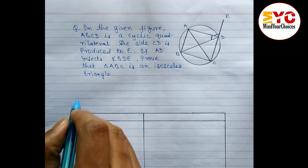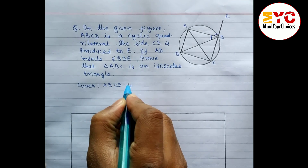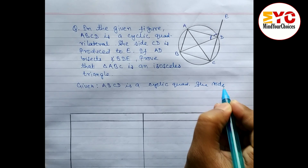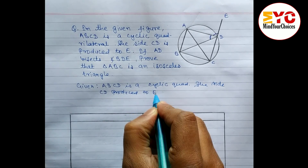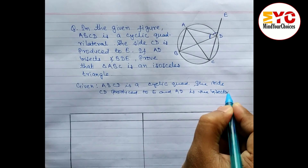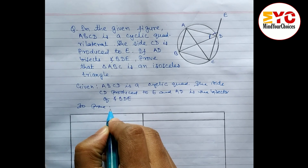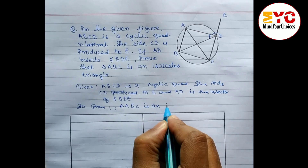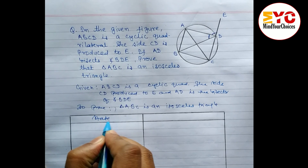First, let's write down what is given: ABCD is a cyclic quadrilateral, side CD is produced to E, and AD is the bisector of angle BDE. What we have to prove: triangle ABC is an isosceles triangle.